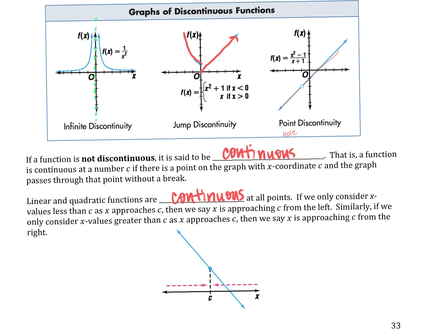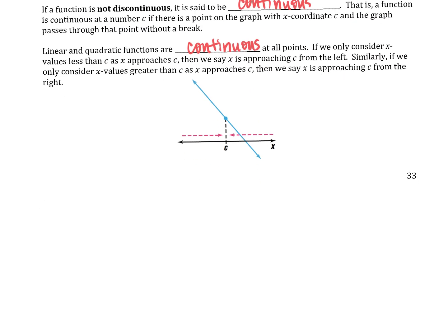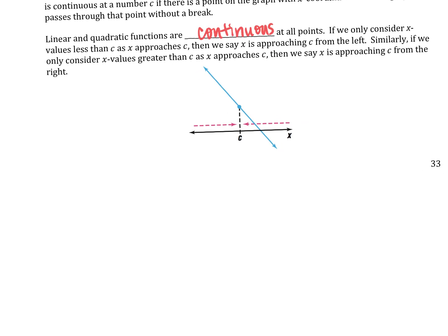If I went up here to this jump discontinuity, do you agree? If I come in from the left and from the right as I approach zero, my little lightsabers would not touch. From the left and from the right, they would have a gap between them. So for something to be continuous, we need the limit as x approaches c from the left — this is all new notation.